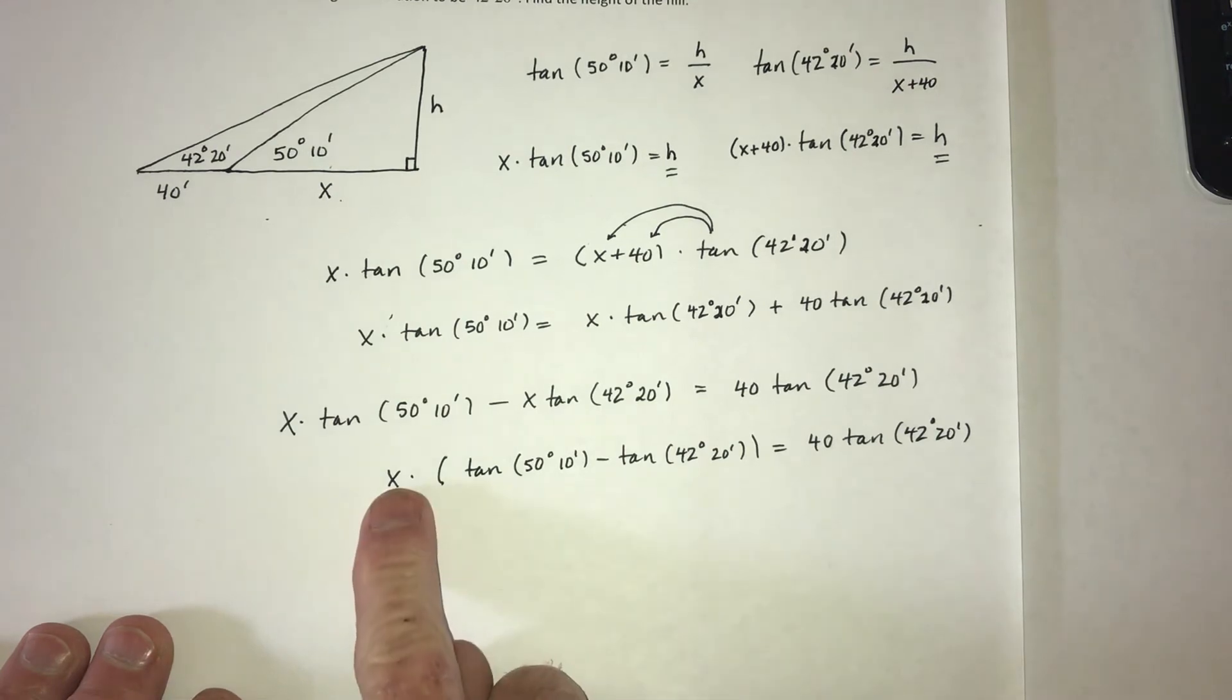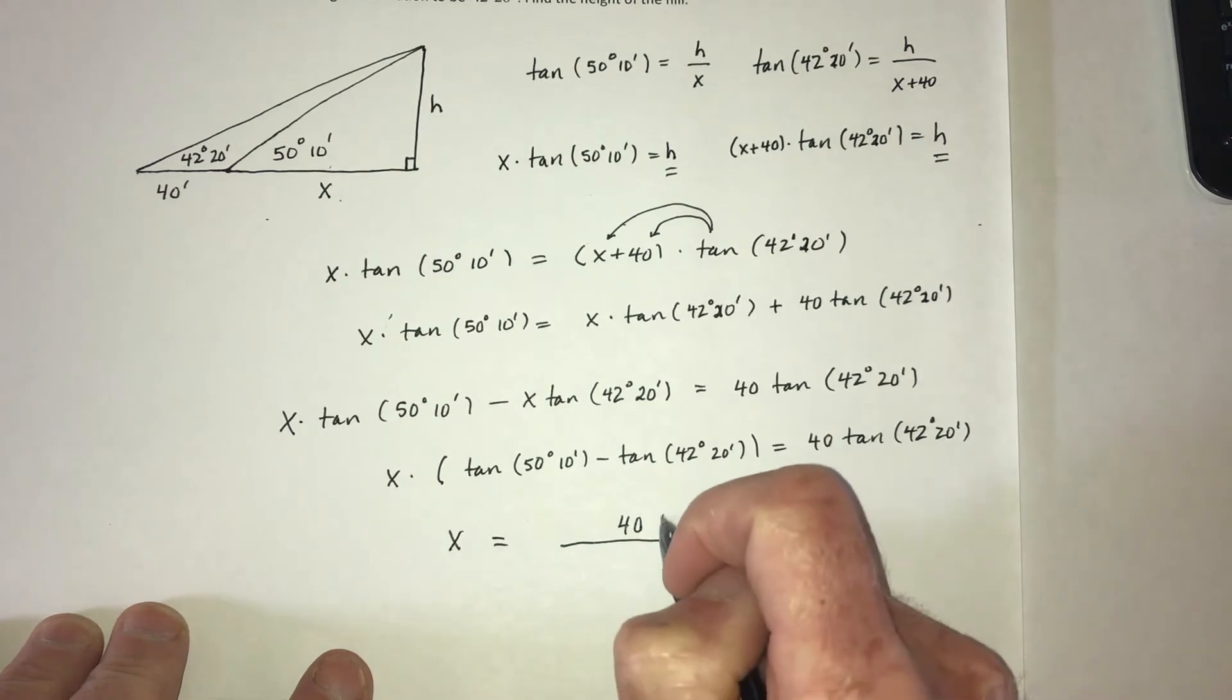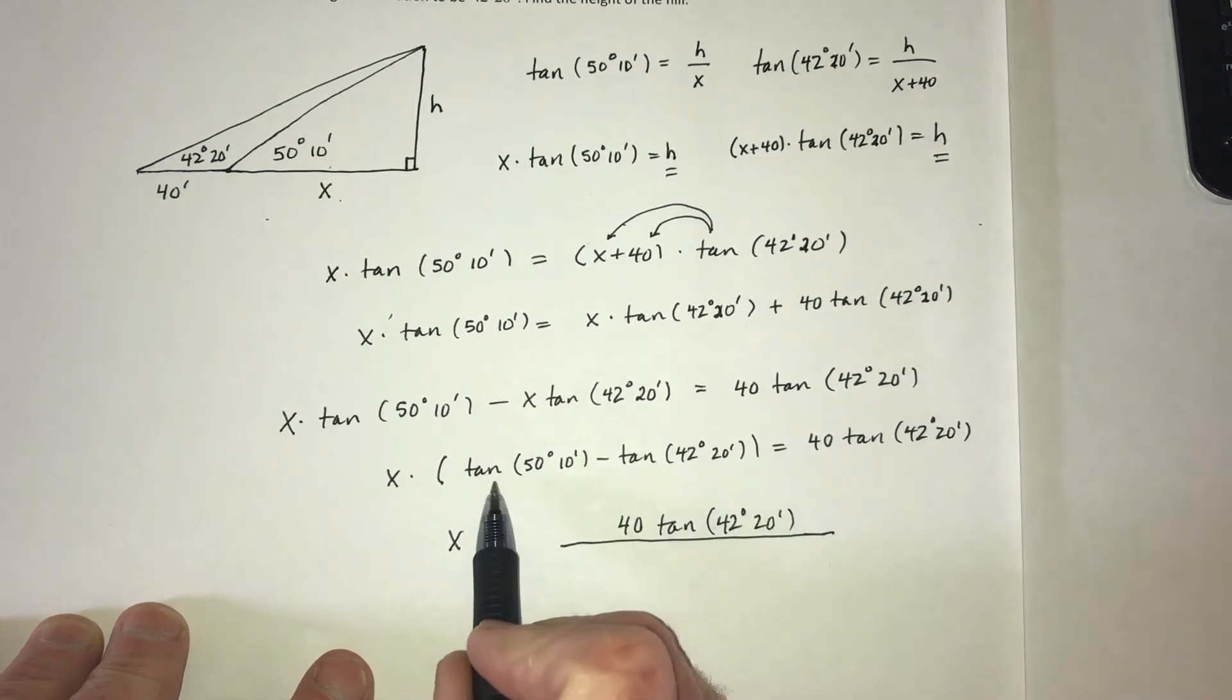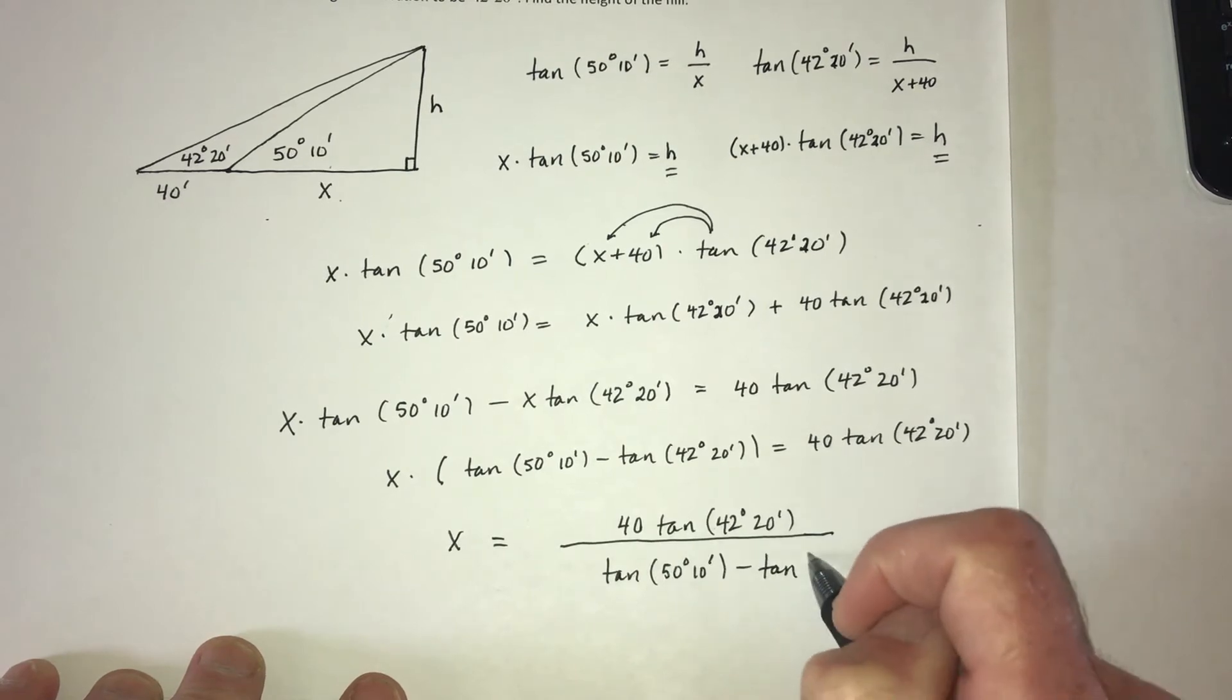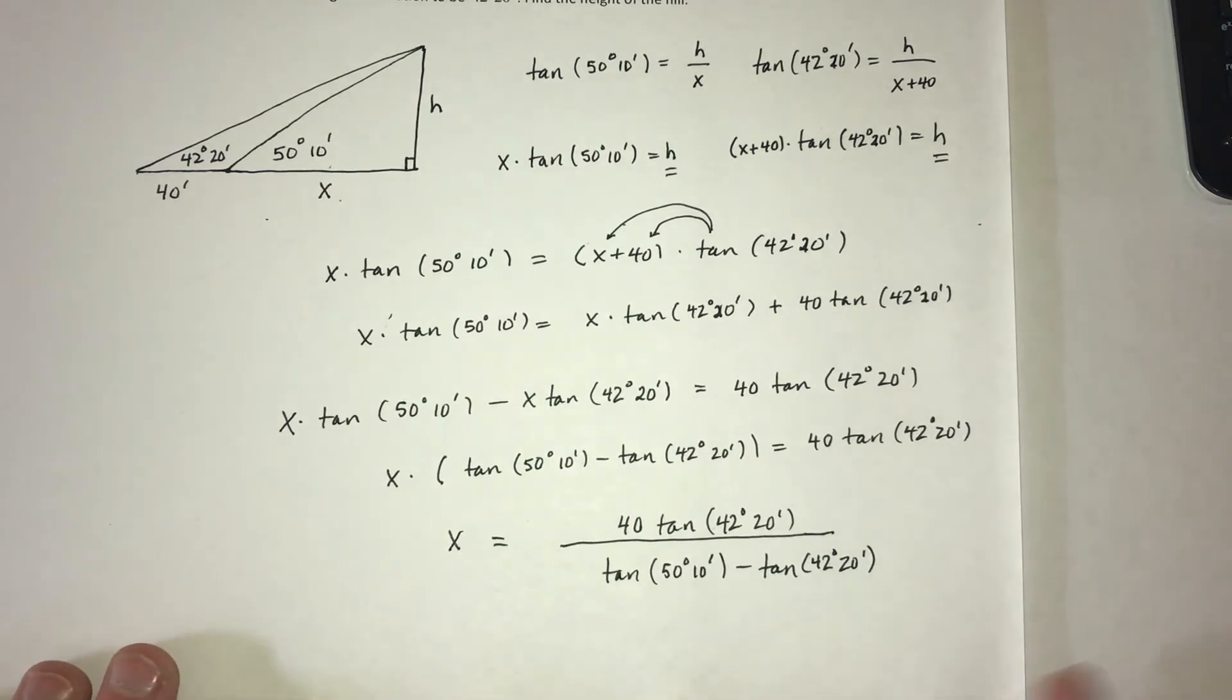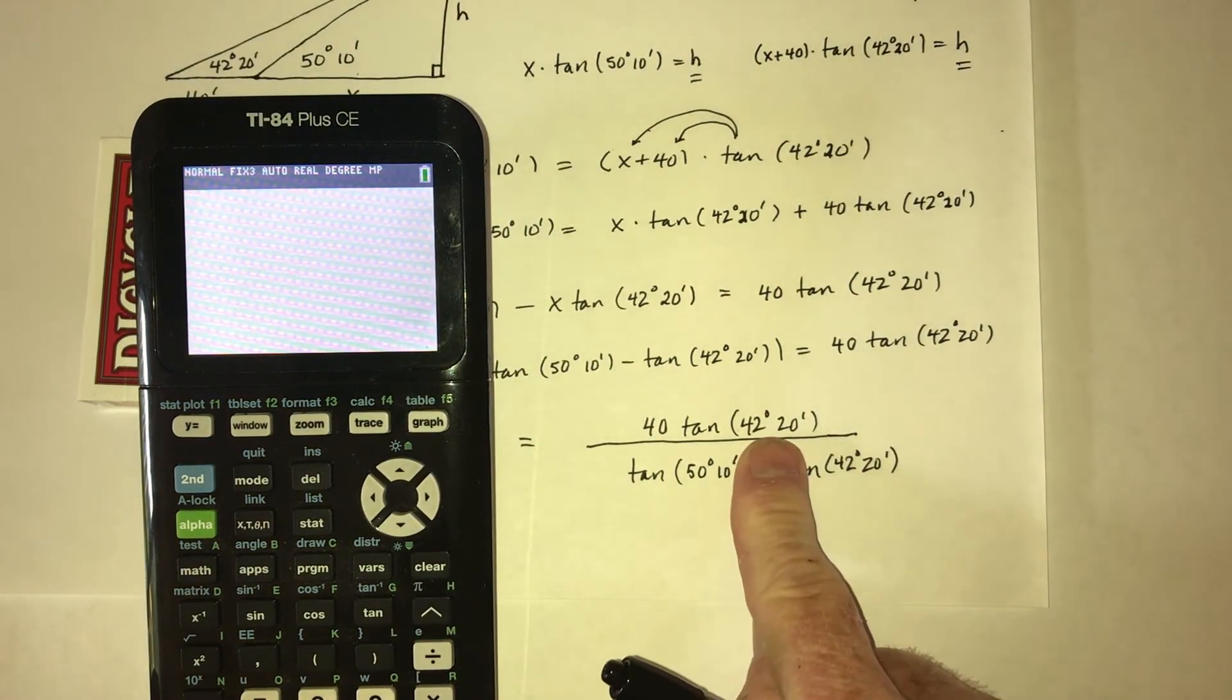Okay, then the last step is to solve for this x. Divide both sides by this whole thing. So x is on the left side and then the right side already had 40 tangent of 42 degrees, 20. And then divide by this whole thing. This problem takes a little more writing than usual. But it's going to be so worth it because we're going to find out the height of a hill.